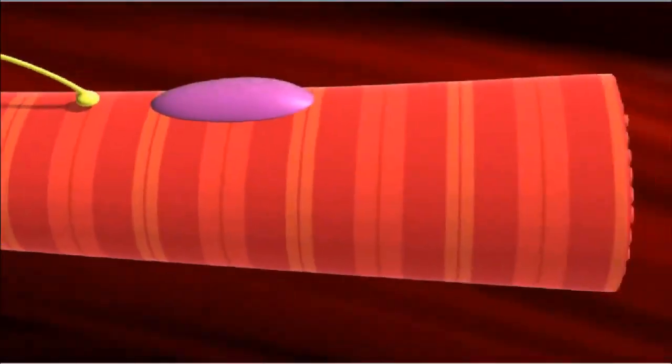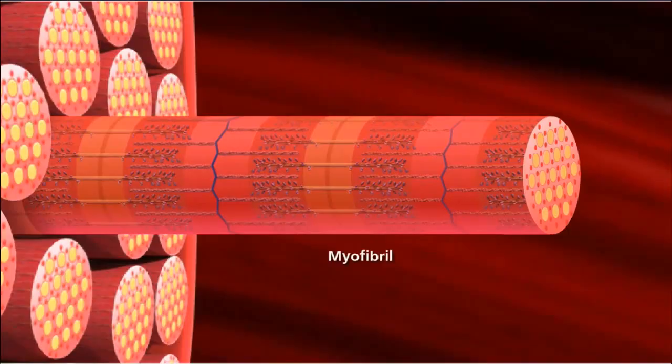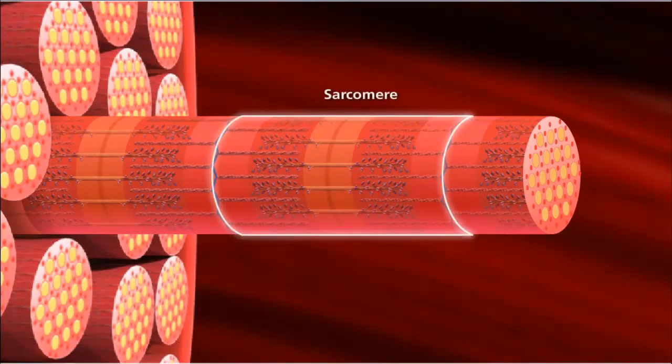Muscle fibers are composed of many myofibrils. A myofibril contains contractile units called sarcomeres. Sarcomeres run adjacent to one another down the length of the myofibril.